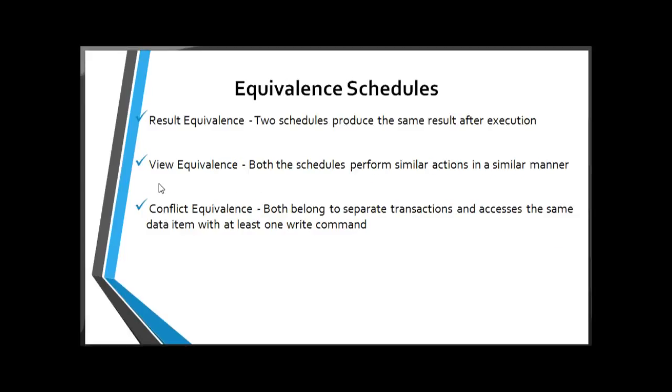Next is the Equivalence Schedule. There are three types: Result Equivalence, View Equivalence, and Conflict Equivalence. If two schedules produce the same result after execution, they are said to be result equivalent. They may yield the same result for some values and different results for another set of values. That's why this equivalence is not generally considered to be one of the best solutions.